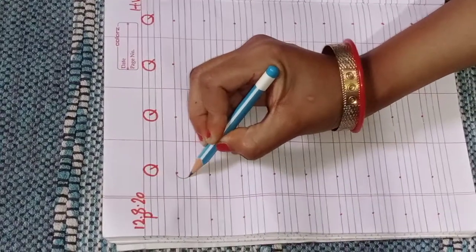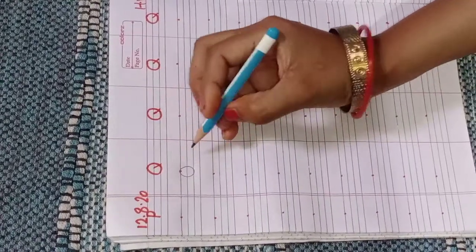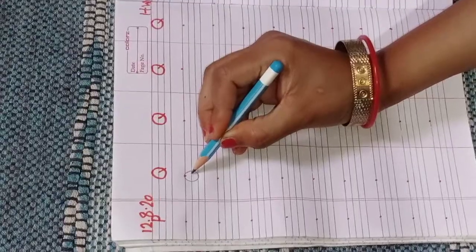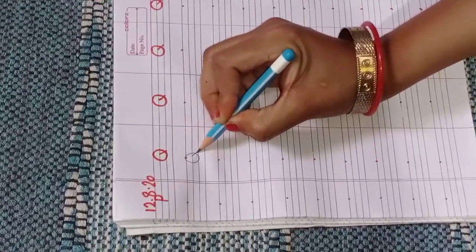First of all, make a circle like this and make a small slant line in it. Do like this. Make a slant line between two black lines.